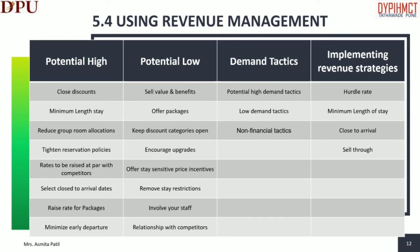Charge rates consistent with competition but limit rate increases to those rates published in the central reservation system and listed in brochures. Select close-to-arrival days: by allowing reservations only as long as a guest arrives before a certain day, a property is able to control the volume of check-ins. Monitor denials that occur during this restriction. Raise rates for packages — if already offering a package discount, consider raising rates back. Minimize early departures.